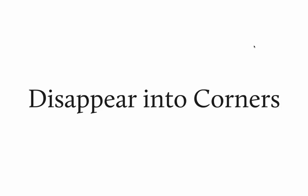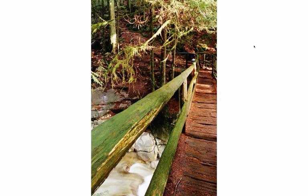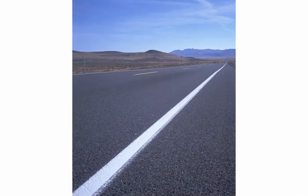Another convention is to have some element disappear into the corners. Here are a few examples. This railroad — you can see it disappears into the lower left corner and approximately to the upper right corner. Same thing with the bridge, the arm of the bridge. And this roadway disappears to the lower left-hand and upper right-hand corners.